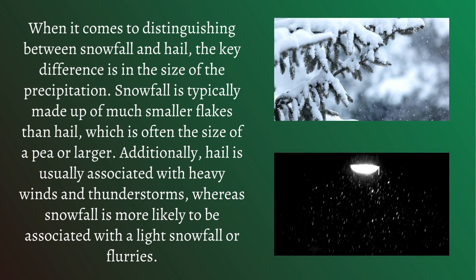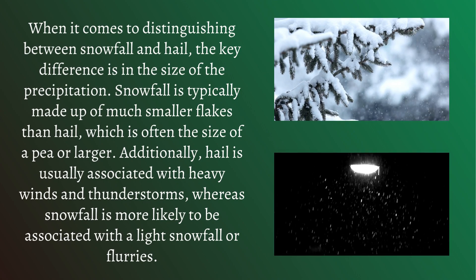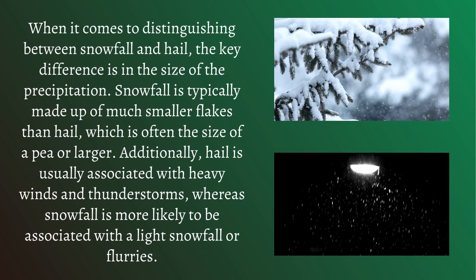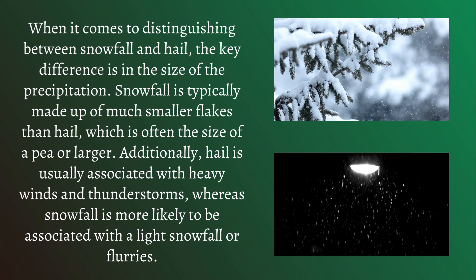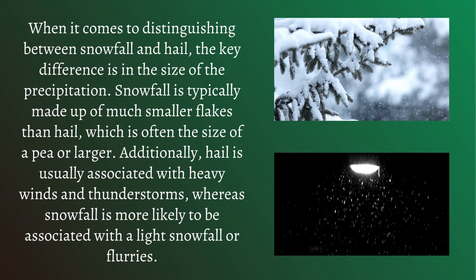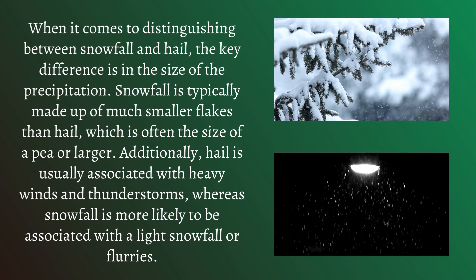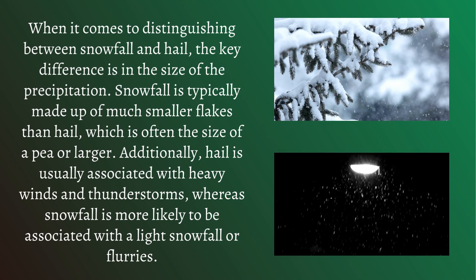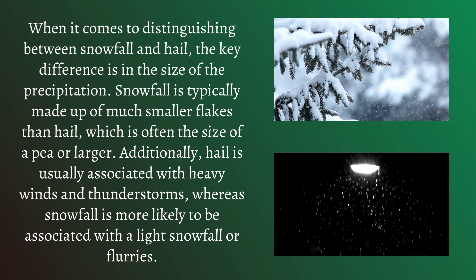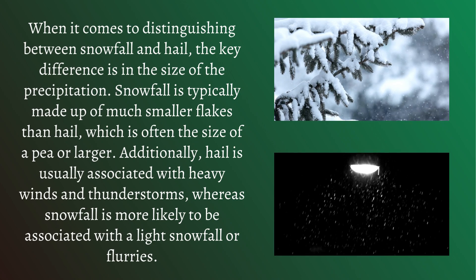When it comes to distinguishing between snowfall and hail, the key difference is in the size of the precipitation. Snowfall is typically made up of much smaller flakes than hail, which is often the size of a pea or larger. Additionally, hail is usually associated with heavy winds and thunderstorms, whereas snowfall is more likely to be associated with a light snowfall or flurries.